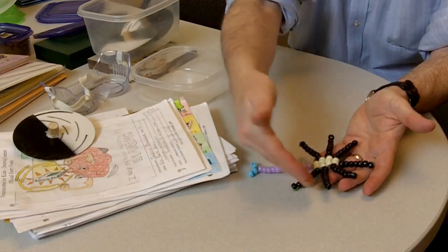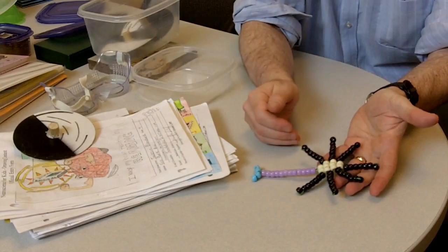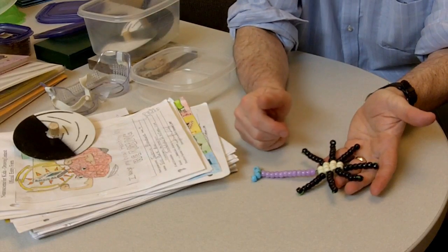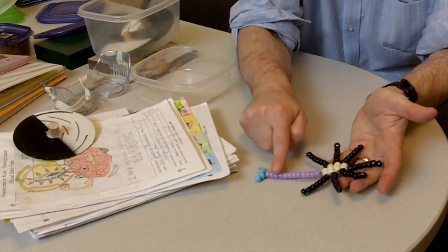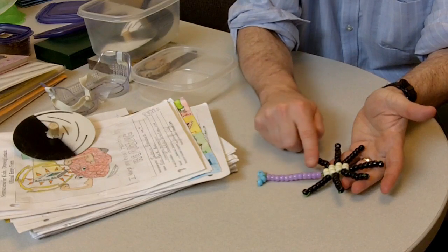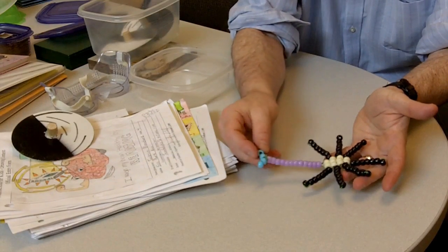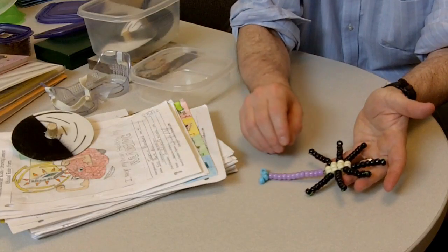The black area here are some dendrites, the white is the cell body, the purple here is the axon of the neuron, and then the turquoise bluish color here represents the synaptic terminal.